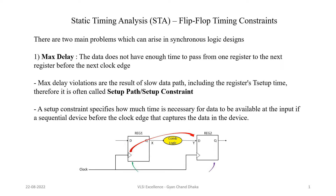Max delay violations are the result of a slow data path and are often called setup path or setup constraint. You will see it mentioned as setup constraint in some places and as max delay constraint in others — don't get confused, both terms are the same. A setup constraint specifies how much time is necessary for the data to be available at the input of a sequential device before the clock edge that captures that data.